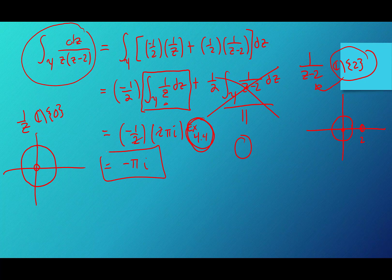So our result is -1/2 times 2πi plus 1/2 times 0, and the 2s cancel, giving us -πi. These theorems help us break down more complex integrals — they're not just for saying an integral is 0. Your function must be holomorphic on a region where the path is contractible. If you can analyze your region and function carefully, it leads to very simple calculations. Hopefully this example shows how these results help us simplify more complex integrals.